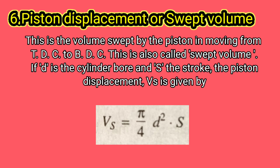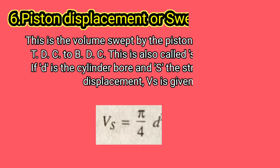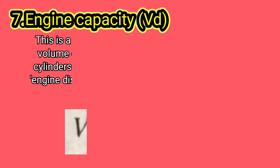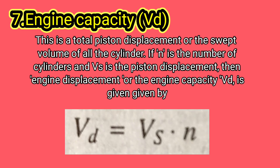If D is the cylinder bore and S is the stroke, the piston displacement V is given by that formula. Engine capacity VD: this is the total piston displacement or the swept volume of all the cylinders. If n is the number of cylinders and V is the piston displacement, then engine displacement or engine capacity VD is given accordingly.